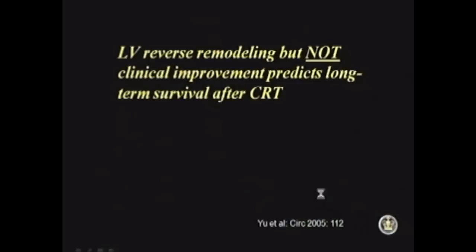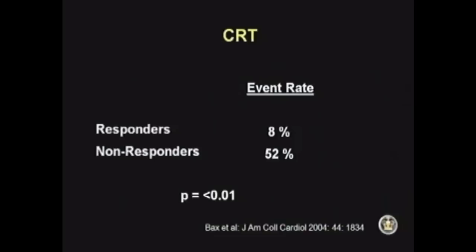It's important to realize that reverse remodeling — when the ventricle shrinks — is the one that predicts mortality, not the patient's clinical symptoms or how the patient is doing. But if your ventricle starts to shrink, these are the patients who are going to do better and have better survival. If you are a responder, meaning your ventricle has begun to shrink, you can see that the mortality rate is much better than if you are not a responder and your ventricle is not shrinking. So it's very important to identify these patients and do bi-V pacing on them.